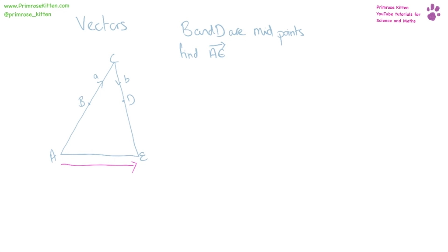This isn't as bad as it seems because we do have a lot of information. We know that B is the midpoint between A and C, so if this bit here is a then we know that this bit here is also a. The same is true on the other side — this bit here is b, and that's half of the distance from C to E, so we know that this bit here is also b.